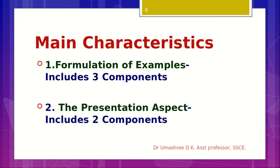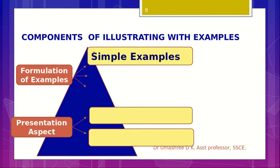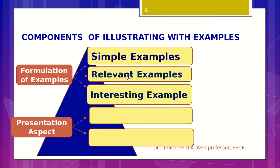The main characteristics or components of the skill are two. The first one is formulation of examples, which includes three components. The second major component of the skill is the presentation aspect, which includes two components. The components under formulation of examples are three sub-components: formulating simple examples, formulating relevant examples, and formulating interesting examples. This formulation of examples is done by the teacher.